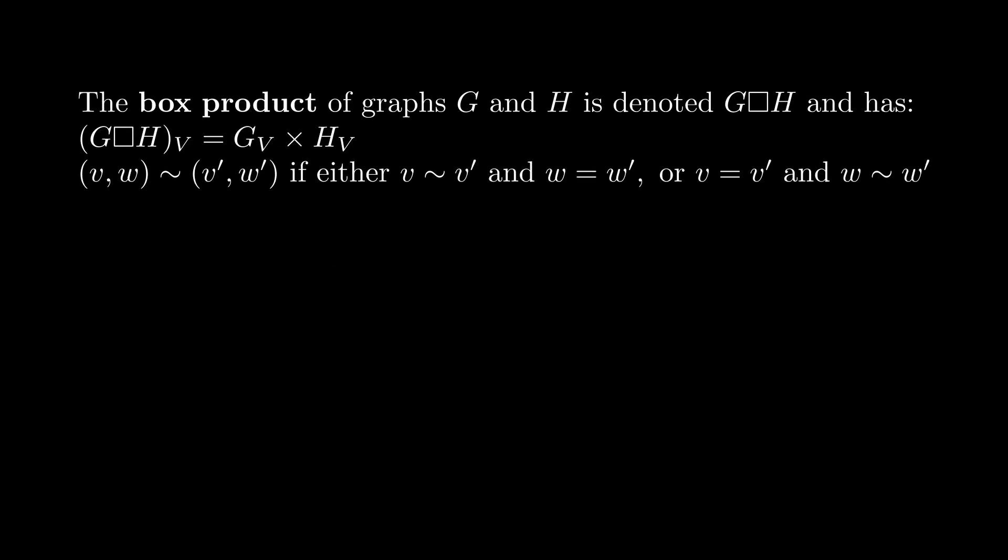And there's this edge condition that there's an edge from a pair of V, W to V prime, W prime, if either there's an edge from V to V prime in G, and W is equal to W prime, or V is equal to V prime, and there's an edge from W to W prime in H.